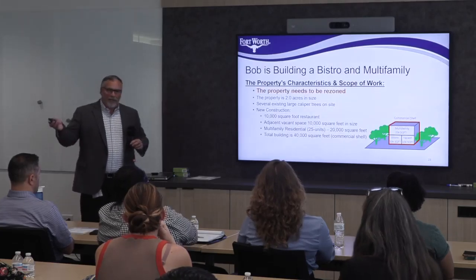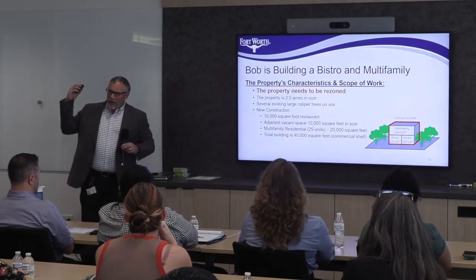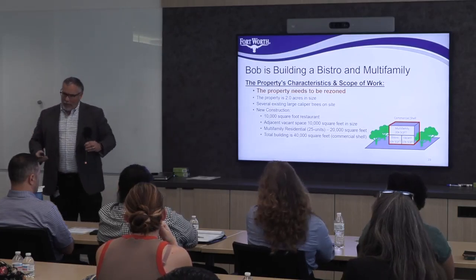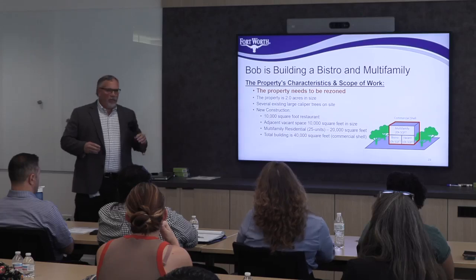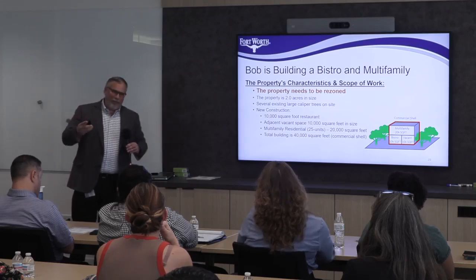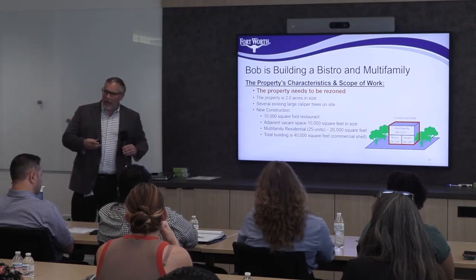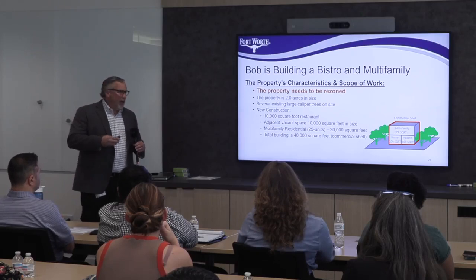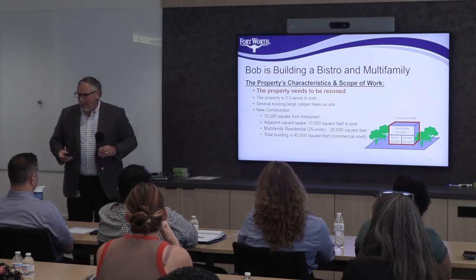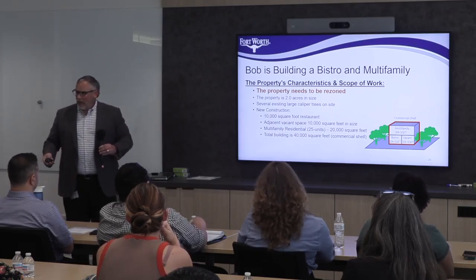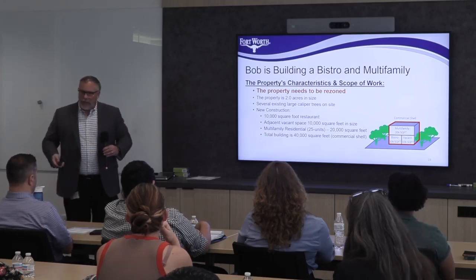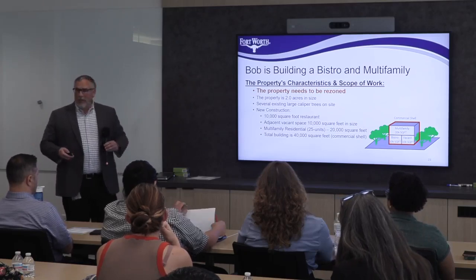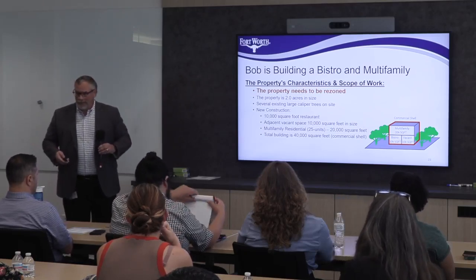Let's get back to Bob. When Bob looked at his zoning map, he noticed he had AG zoning, and AG zoning doesn't allow what he wants to do. He wants to do a bistro, some multifamily, and some retail. So in this situation, Bob needs to change his zoning on his site.